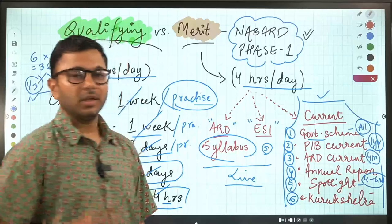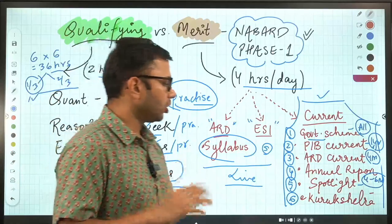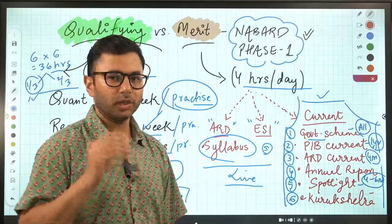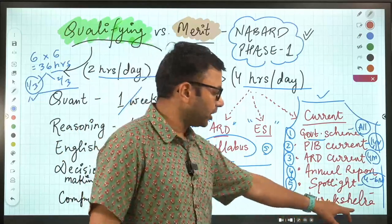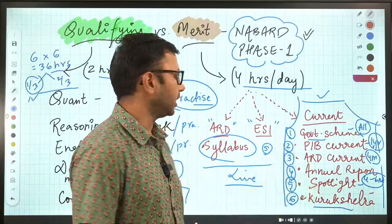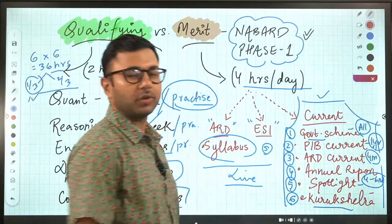And the last is Kurukshetra. This is something that you have to give least importance. Because you might read it, but you will not find many questions from Kurukshetra coming in the examination. It is more useful in phase two. Phase one mein kuch zada use nahi hai.